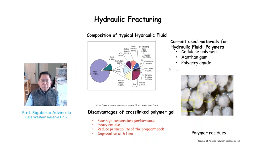These polymers can be in the form of cellulose polymers, starch, xanthan gum, but the industry today mostly uses polyacrylamide. There are advantages and disadvantages of polymers. They can leave heavy residue or breakdown products that are hard to remove from the well, they tend to reduce the permeability of the proppant pack, they degrade over time, and sometimes have poor temperature performance. Hence, polymers are good but not ideal as a viscosifying medium in hydraulic fracturing.